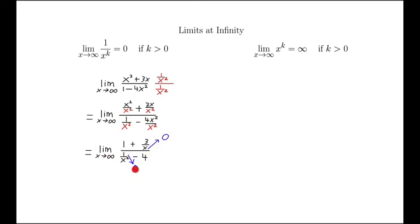So as x tends to infinity, those two pieces go to 0, and we're just left with 1 plus 0 over 0 minus 4, which is minus a quarter, and that's the answer.